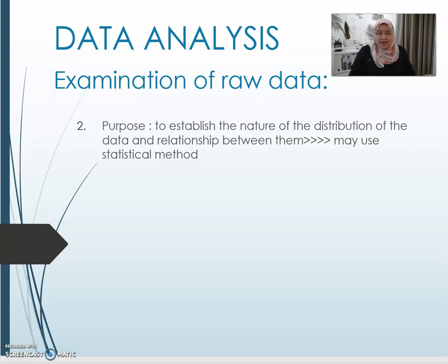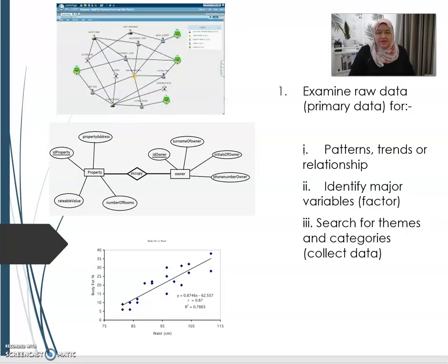The purpose when we examine raw data: the first one is to look at the pattern, trend and the relationship of the outcome. This is an example of how we can draw the pattern, trend and the relationship, identify a major factor.